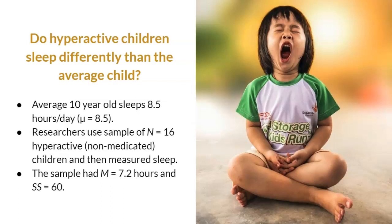Since we do not know what effect hyperactivity will have on sleep, we will conduct a two-tailed test with non-directional hypotheses. The details of this research study are also provided in your video handout. The average 10-year-old sleeps 8.5 hours a day, which is mu equals 8.5. Researchers studied a sample of n equals 16 hyperactive children who are not currently medicated and measured their sleep. This sample had a mean of 7.2 hours of sleep and a sum of squares equals 60. I encourage you to pause the video here and try to do the four steps on your own first, then resume the video to check your answers.